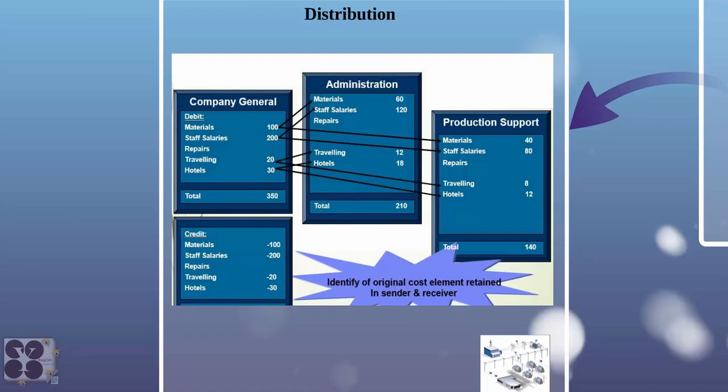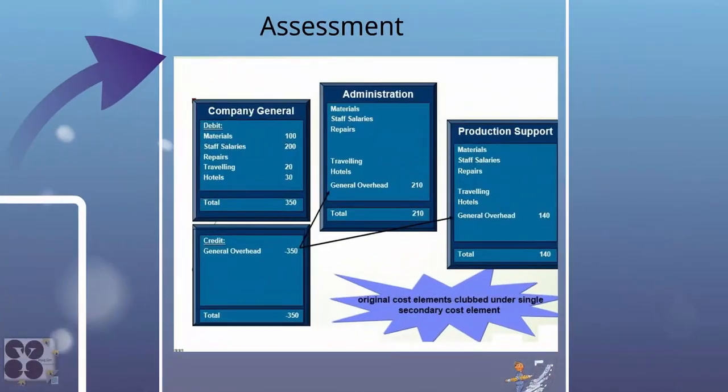Now let's take a look at the assessment method. In assessment, we have one debit, one credit on the left side — $350, the same postings. Look at how the arrows have been reduced: just two arrows instead of eight line items. What we did is take out that $350 posting and bifurcate it between administration and production support without referring back to the original transactions. We just take out the credit amount and post it to different cost centers without referring back to the original debit postings. That way we reduce the line items.